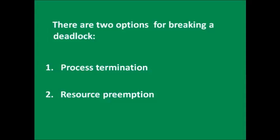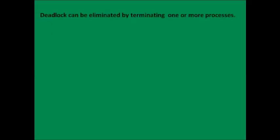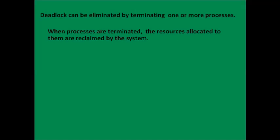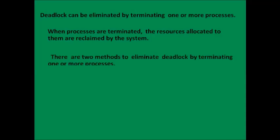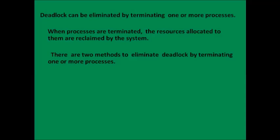First we will study how we can break a deadlock by process termination. Deadlock can be eliminated by terminating one or more processes which are involved in deadlock. When processes are terminated, the resources which were allocated to them are reclaimed by the system. There are two methods to eliminate deadlock by terminating one or more processes.